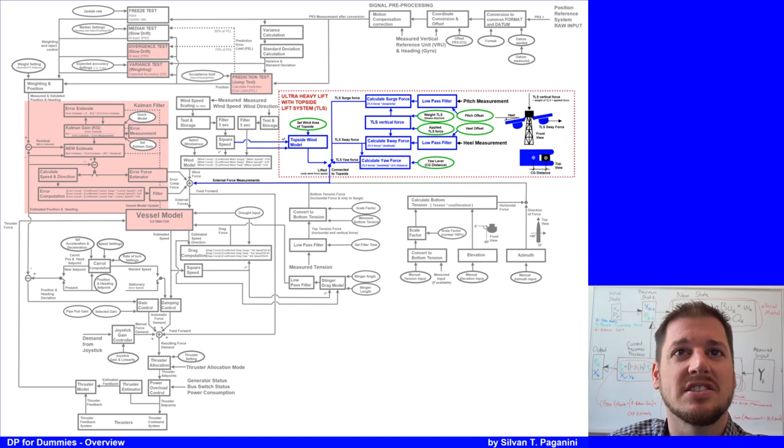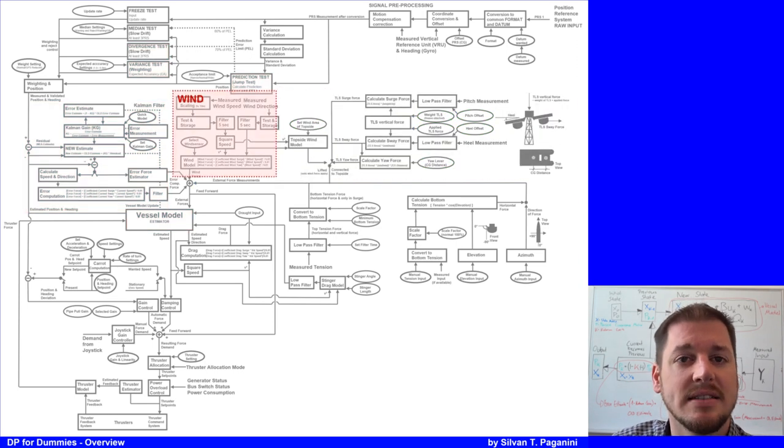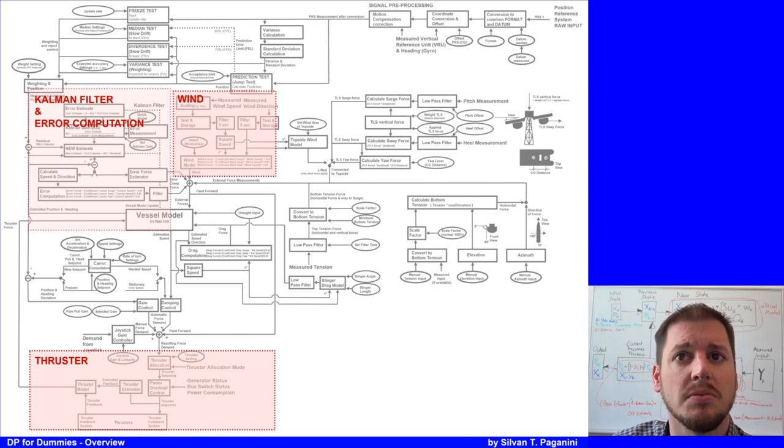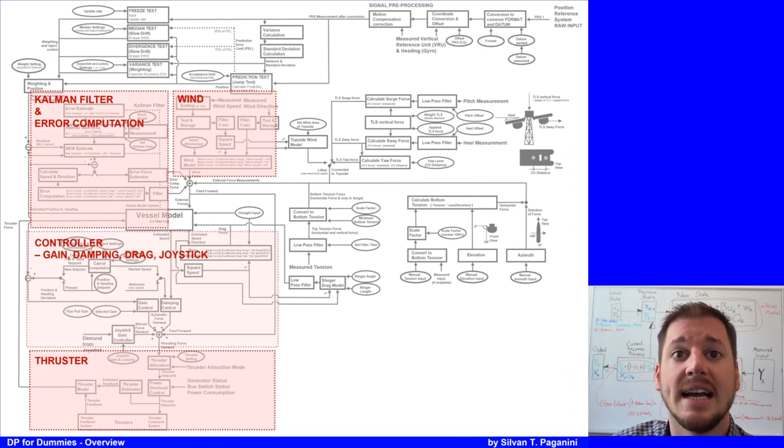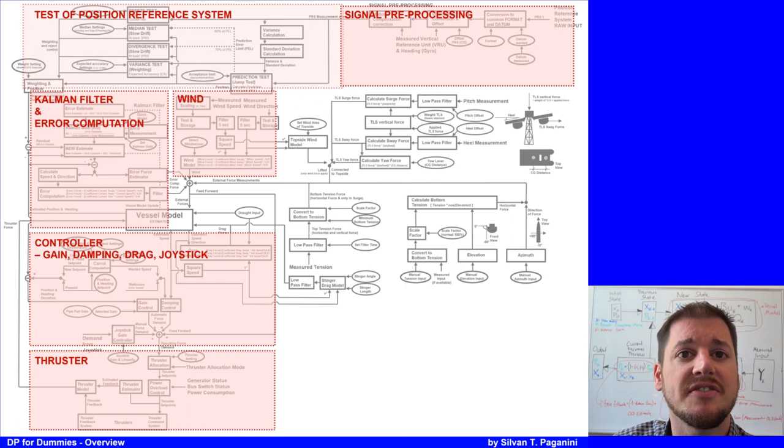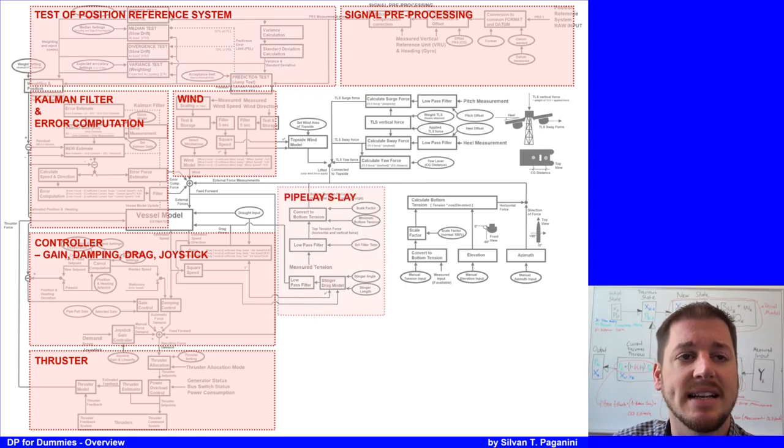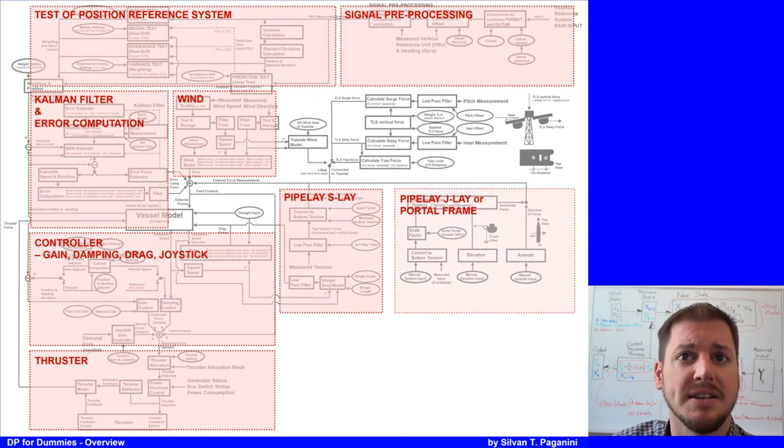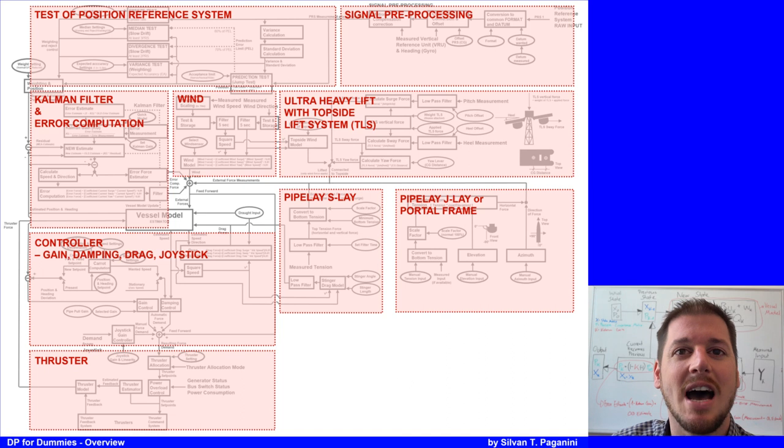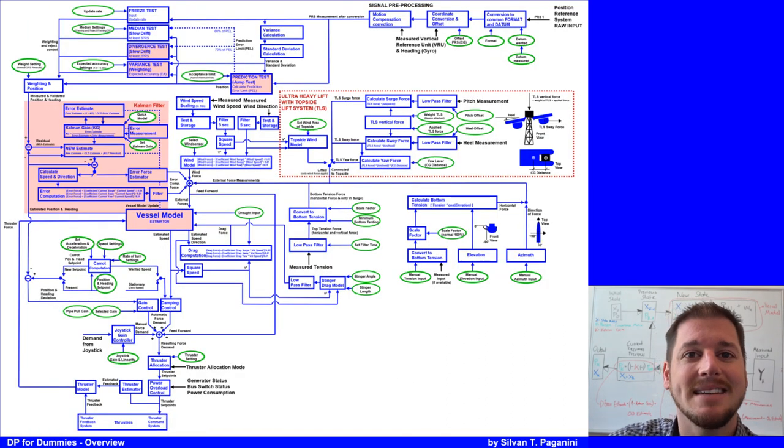There are more lectures of this series about wind, thruster, Kalman filter and error computation, controller like gain, damping, drag and joystick, signal preprocessing, test of position reference system, pipeline Ashley, pipeline JLAY respectively portal frame, and ultra heavy lift with the top side lift system. Alright, that's for now. I hope you know more about the DP block diagram. Bye, see you next time!